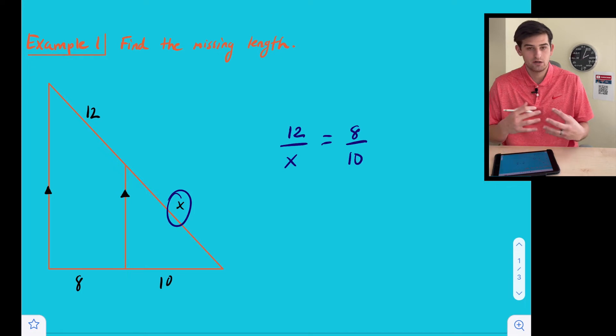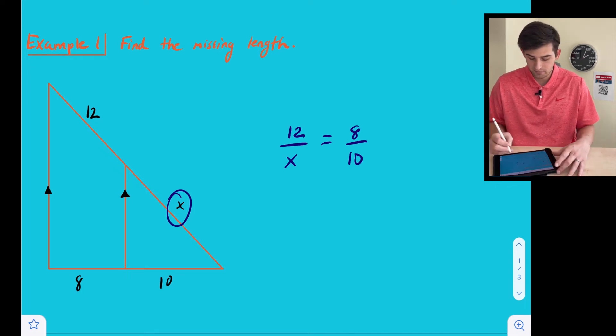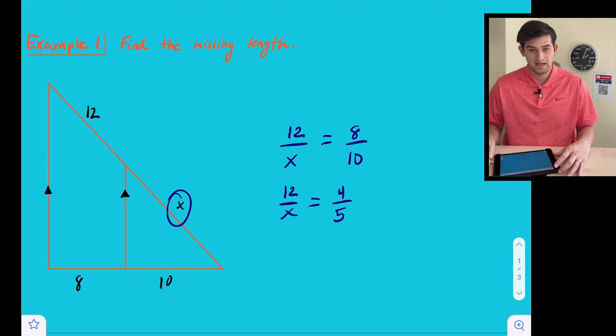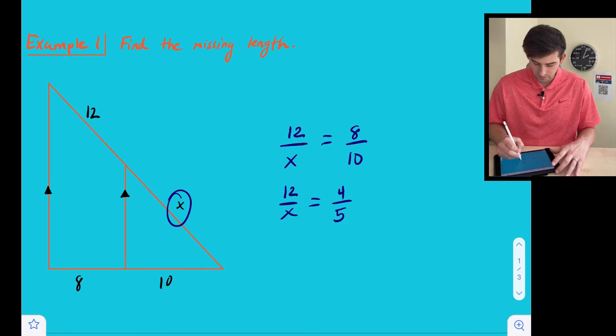So now we can go ahead and cross multiply, or if we want to make the math simpler for us, we can simplify that fraction 8 over 10. So we could say 12 over X is equal to 4 over 5, which is dividing 8 and 10 by 2, and now we can cross multiply.